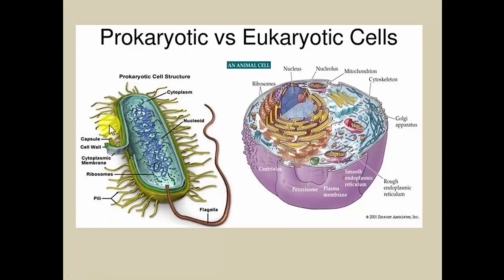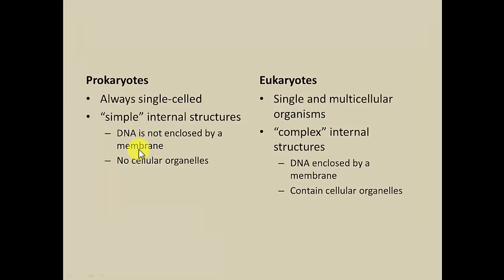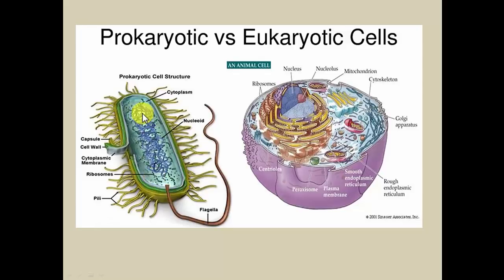Here are a couple basic diagrams of two cells — a prokaryotic cell on the left and a eukaryotic cell on the right. The prokaryotic cell has a cell membrane and cell wall as its boundary, and inside there's just stuff floating around. The nucleoid is a fancy word for the DNA, which is not enclosed by a membrane — it's just floating around inside the cell. In a eukaryote, the DNA is located inside a little structure called the nucleus.